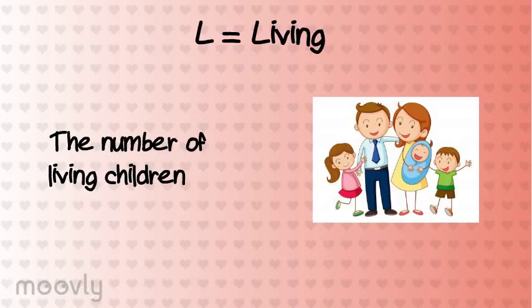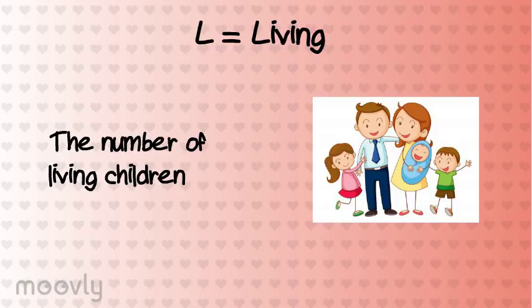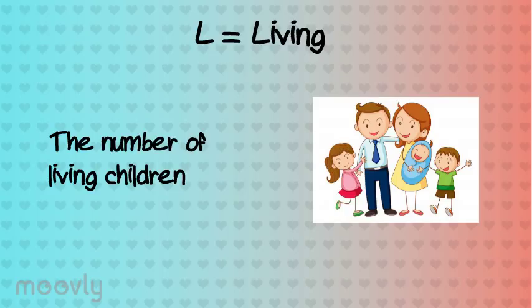Living is the number of living children. For multiple births, like twins or triplets, you count each living child. Using the same example, her gravidity is four, term is one, preterm is one, abortion is one, and living is three.